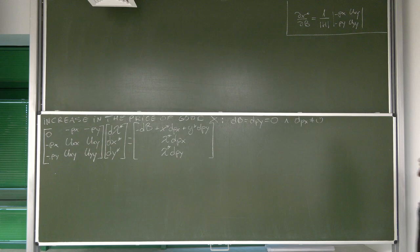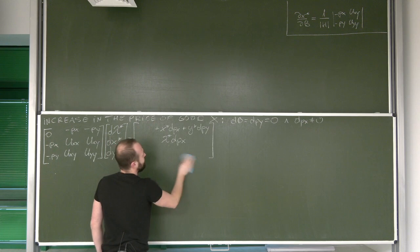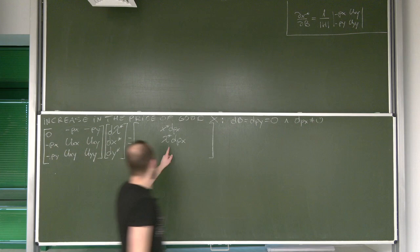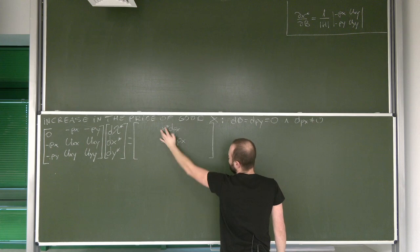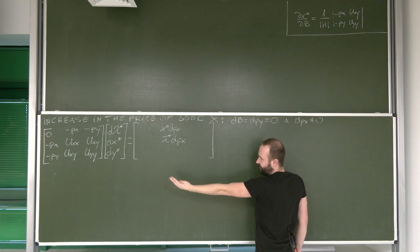We can get rid of some elements in the system we were using. So this is going to be zero, this is going to be zero, and this is going to be zero. We are just left with two elements. Because each of these expressions is a product of something with dPx, and dPx is different than zero, it would be a good idea to divide both sides of the system by dPx.